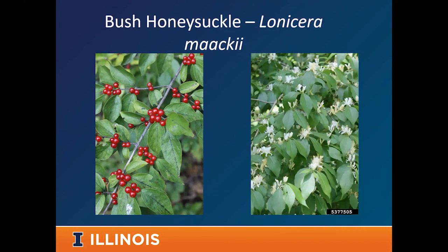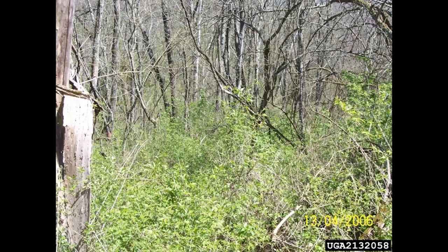If you're not familiar with bush honeysuckle, it has opposite leaves. In the spring it produces flowers with some fragrance — typically white giving way to yellow, though a couple of species have pinkish to almost red flowers. Then it produces bright red to bright orange berries. All of these are multi-stemmed shrubs that get up to 12 to 15 feet tall, with a strong arching nature where the ends of branches deflect back down toward the ground, often forming heavy, dense infestations.